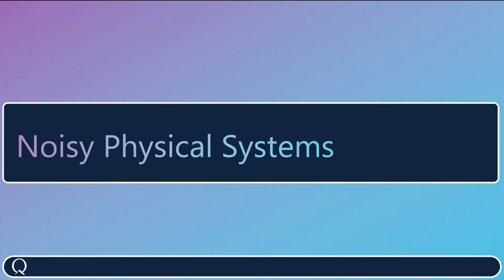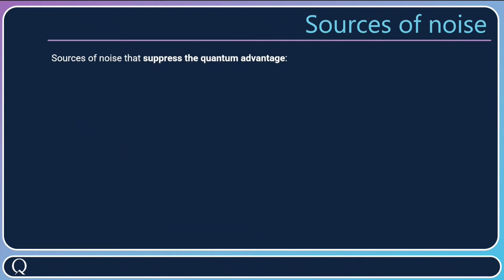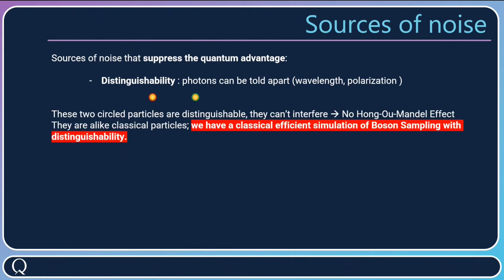But what happens when we have noise, when we have noisy physical systems? First, there are sources of noise that suppress the quantum advantage. The first one is distinguishability. What it means physically is you could tell which photon is which, for example because of the wavelength—photons don't have the same color—or maybe the polarization. If you are able to label your photons, one by red and the other by green, they can't interfere. There is no longer a Hong-Ou-Mandel effect, and they are like classical particles. If we have classical particles, we have a classical efficient simulation for boson sampling with distinguishability.